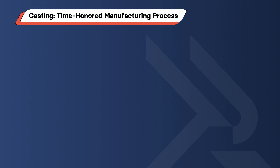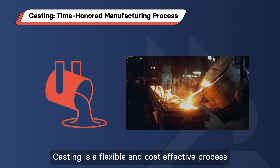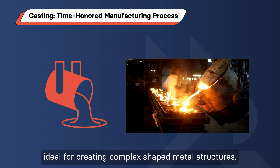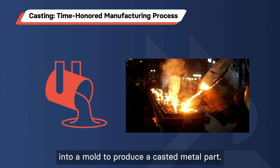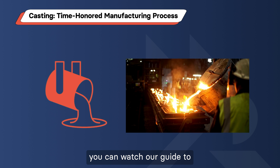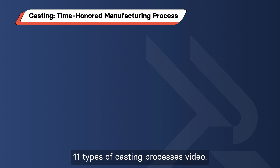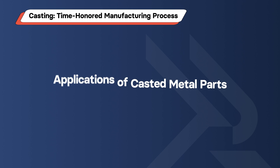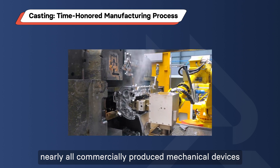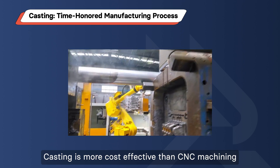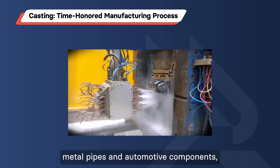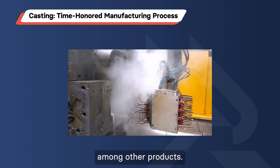Casting – Time-honored Manufacturing Process. Casting is a flexible and cost-effective process, ideal for creating complex-shaped metal structures. It involves pouring liquid material into a mold to produce a cast metal part. Casting is capable of manufacturing nearly all commercially produced mechanical devices and is more cost-effective than CNC machining. It is used for producing washing machines, metal pipes, and automotive components, among other products.